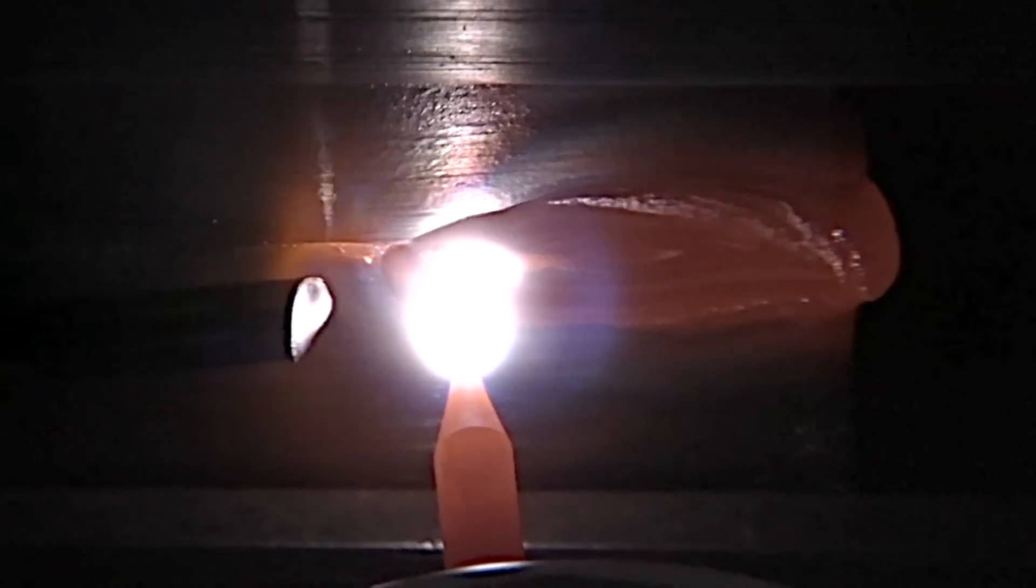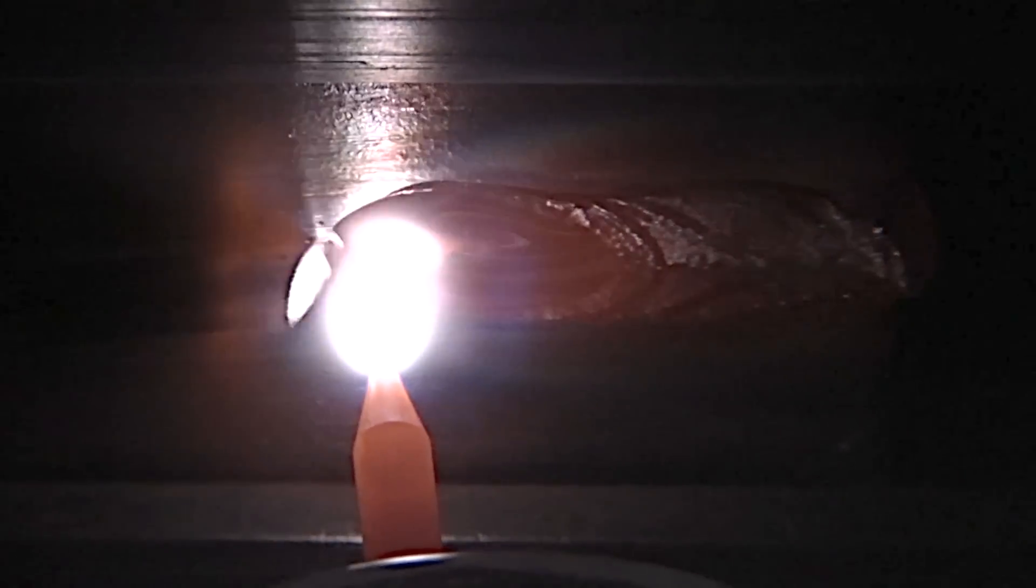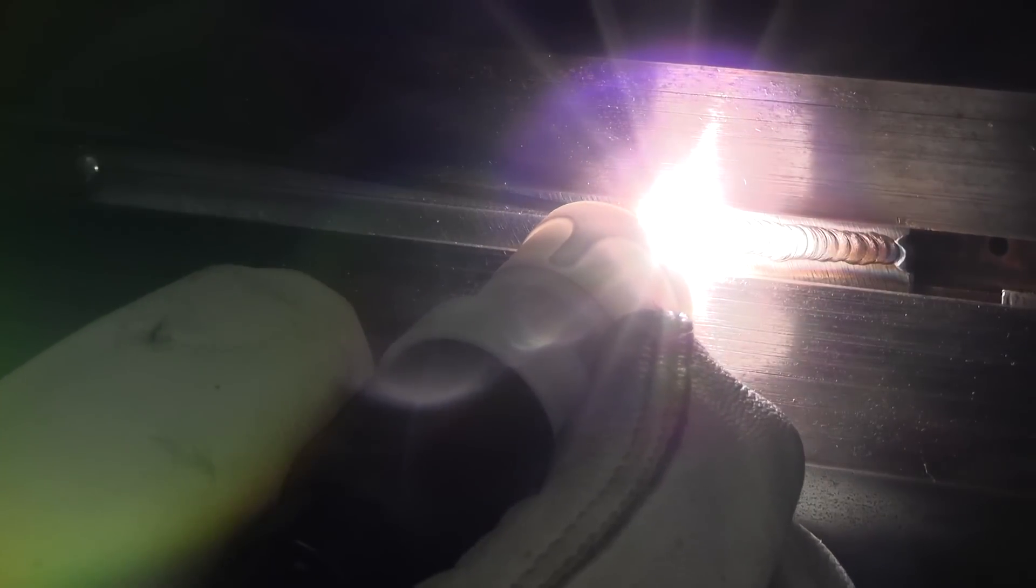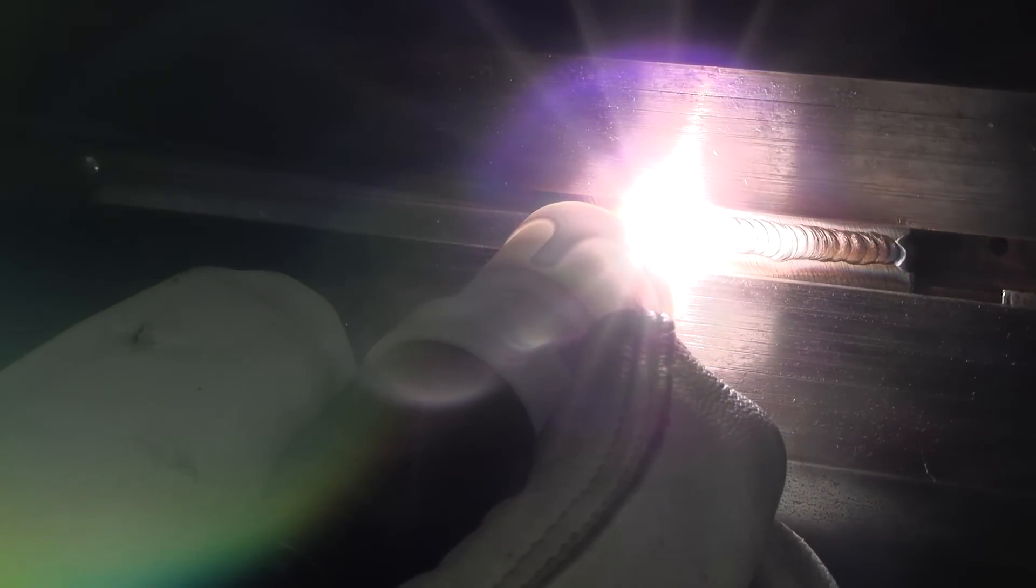I usually make my tack welds just a little bit bigger than normal, and here's why. I can watch the back of that puddle run into that thing without melting the end away, and then take off. And that gives me just about a half a second extra to prevent melting that end away when I start.